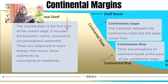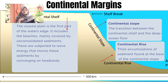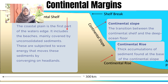Next, we can look at the view about the continental margins, about the depth, aerial extension, and shape of the continental margins. Continental margins have three points. First, continental shelf. Continental shelf are the coastal plains. It's the first part of the water's edge, includes the beach, mainly covered by unconsolidated sediments.